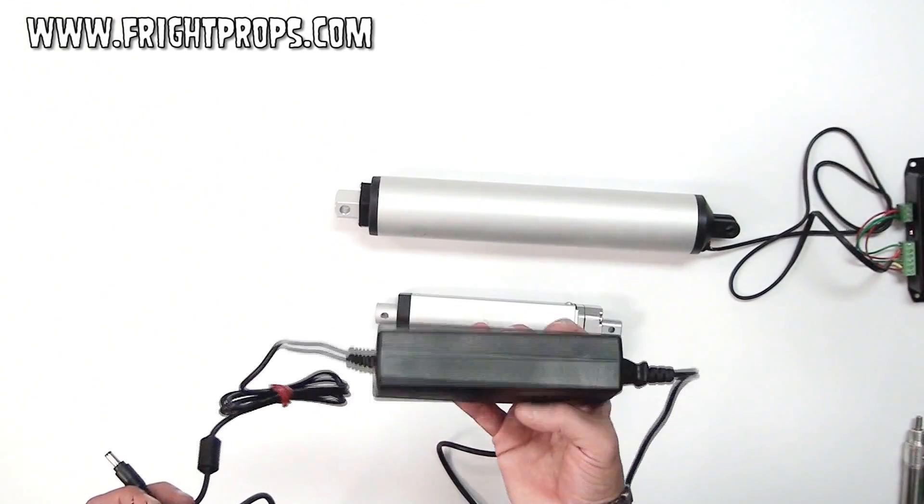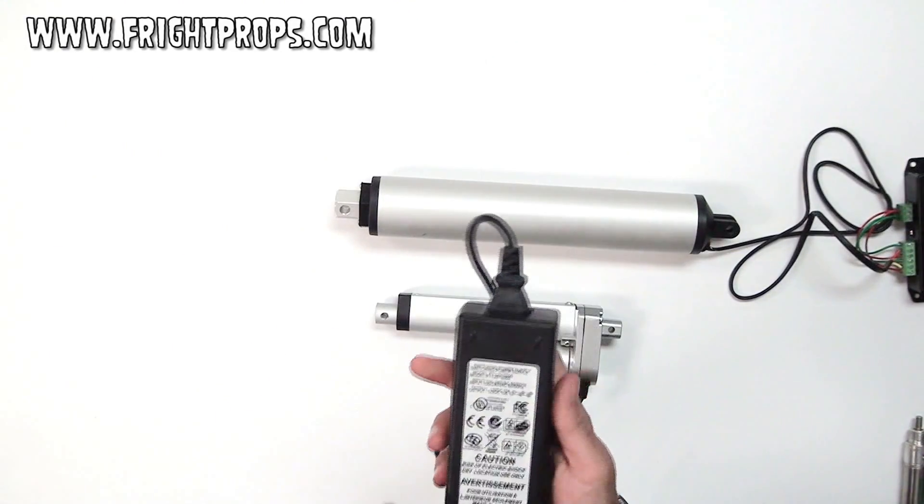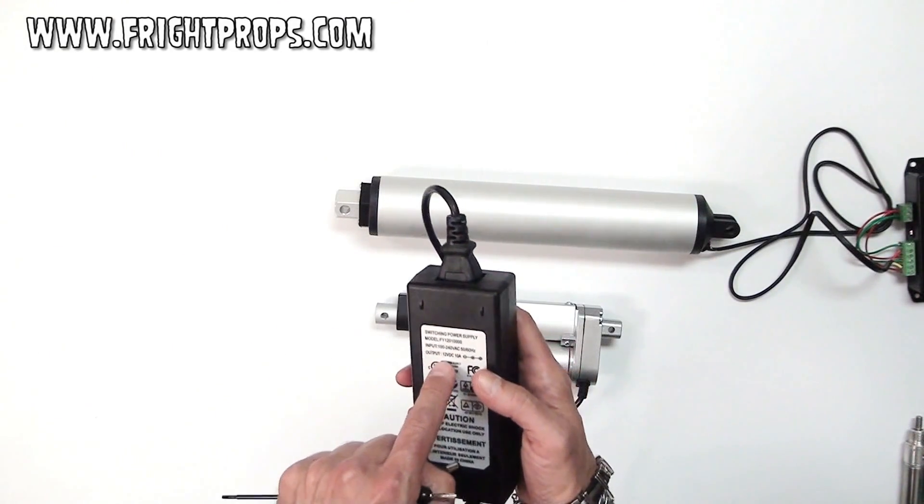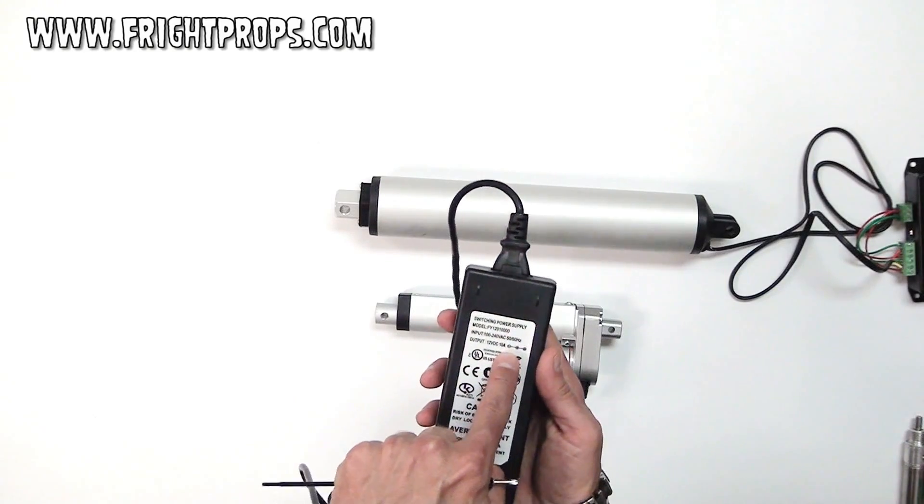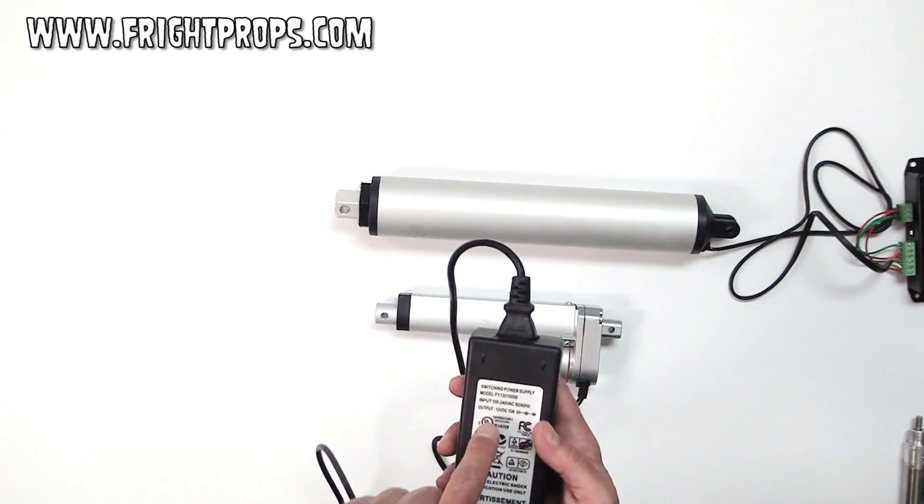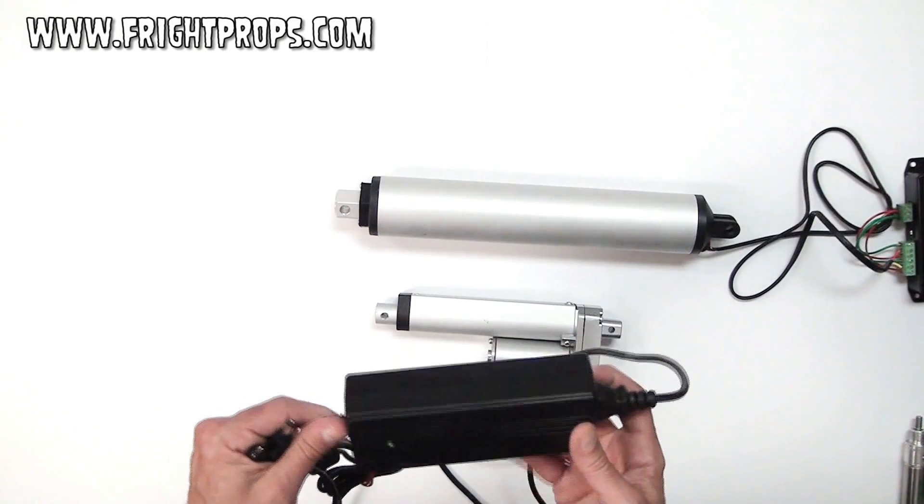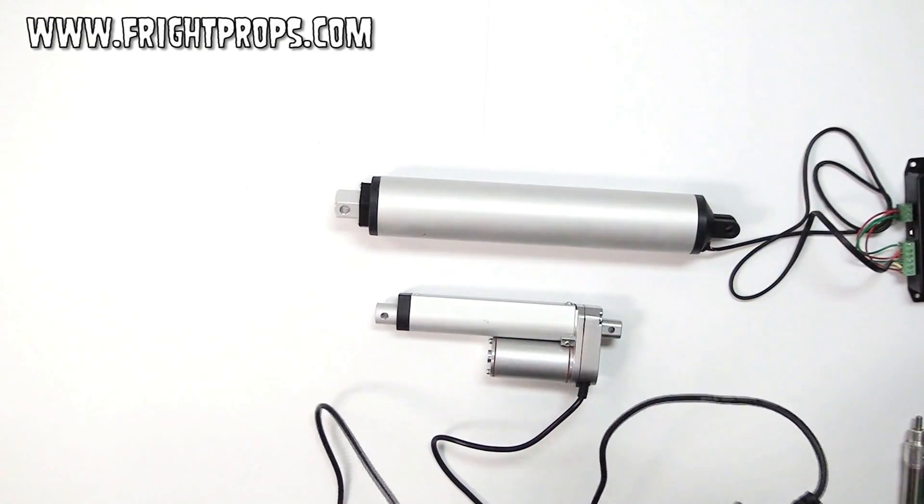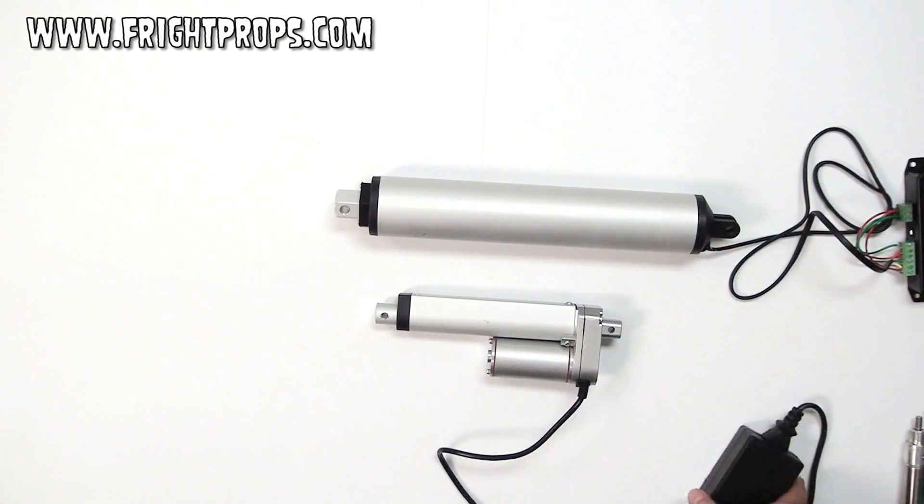This is one of those here. Make sure on the back of the label that it does say twelve volt, ten amp. We also sell twenty-four volt DC power supplies that look very similar, but they'll burn out the actuators. You could also use our twelve volt, five amp power supply, but the actuator may stall when it's under load.